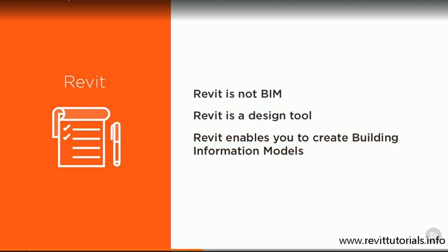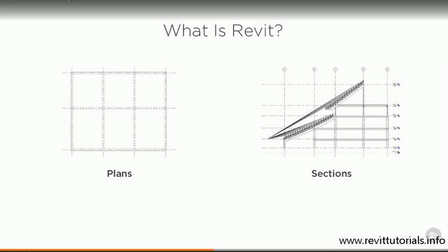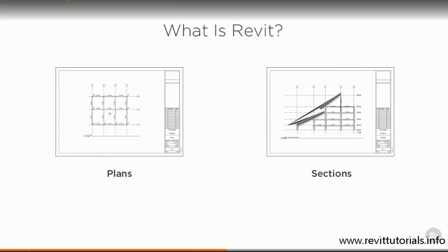We can use Revit to create the geometric representation of our building. We can use Revit to create two-dimensional plans and sections. We can add detail and annotation to our plans and sections, and we can print these out as sheets with our standard title block. And they will look very similar to the drawings that you've been creating up until now.